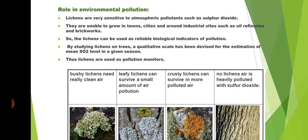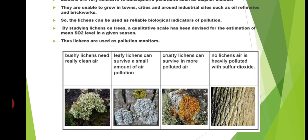Combustion leads to the formation of sulphur dioxide. Lichens are very sensitive to sulphur dioxide and are unable to grow in towns, cities, and around industrial sites such as oil refineries and brickwork factories. If any area has plenty of lichens, we can consider that area to be free of sulphur dioxide. By studying lichens on trees, a qualitative scale has been devised to estimate the mean sulphur dioxide level in a given season.